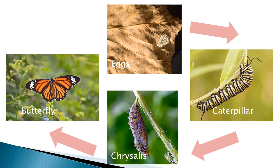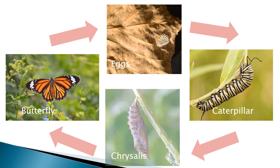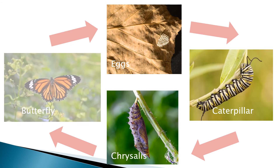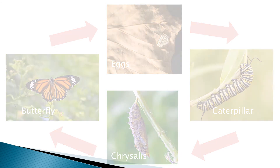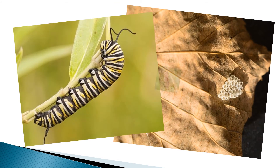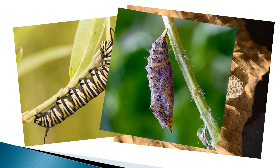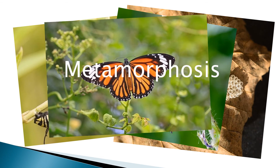The butterfly will look for a mate and lay eggs of its own. Once again the life cycle will continue. The many changes this caterpillar will go through to become an adult butterfly is known as metamorphosis.